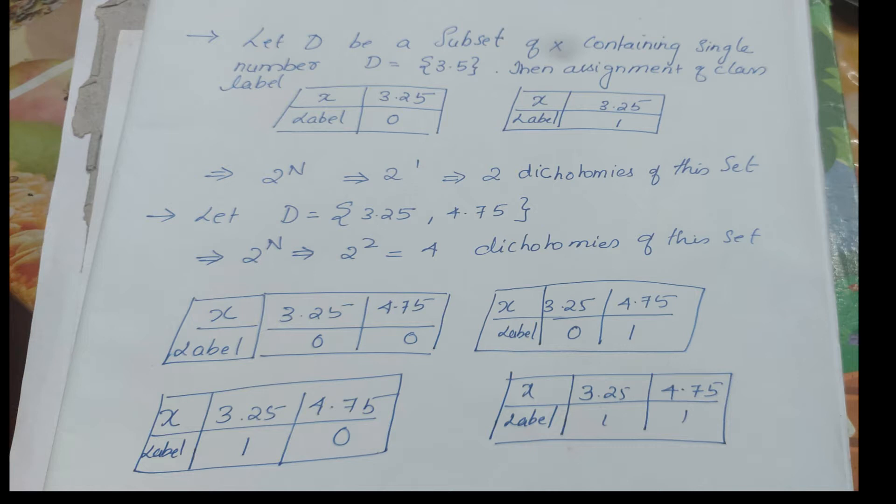Let me tell you the next example. This is D. The N values are 3.25, 4.75. How much dichotomy is this? 2 raised to 2 examples. So it will be 4 dichotomies, or 4 partitions, or 4 disjoint sets.